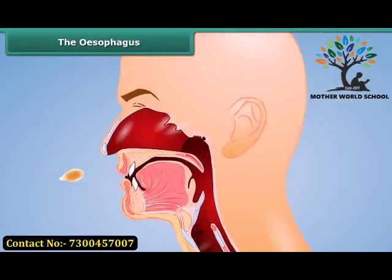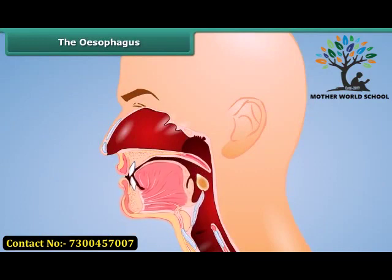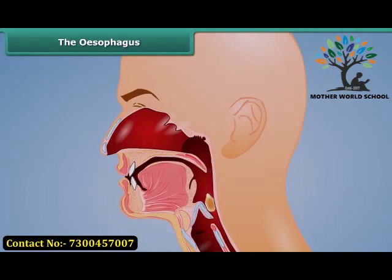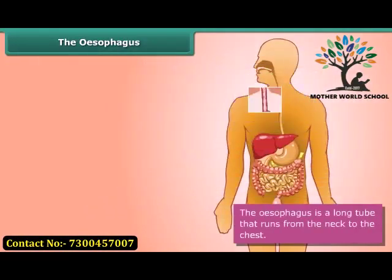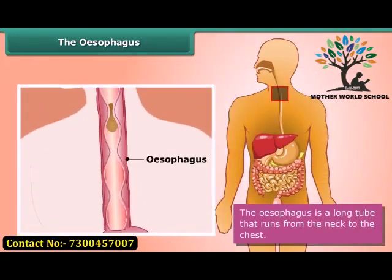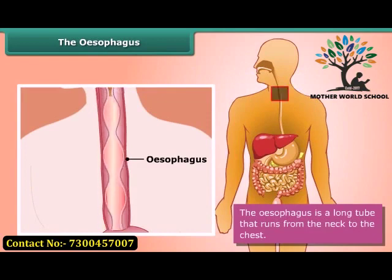When the food we eat becomes a soft mass, our tongue pushes it to the food pipe or esophagus. The esophagus is a long tube that runs from the neck to the chest, and the movements of its walls force the food to the stomach.